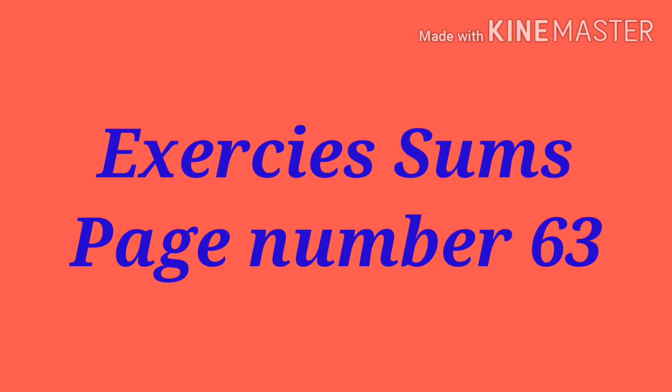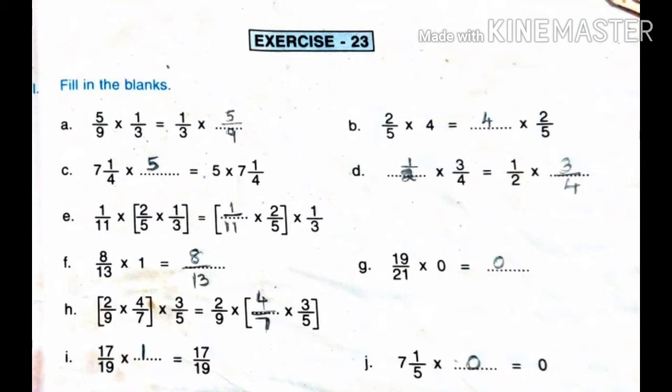First sum — fill in the blanks. The sum is: 5/9 into 1/3 equals 1/3 into dash. This is based on the commutative property. Multiplication of fractions is commutative — when we multiply two fraction numbers, the order of the factors does not affect the product. In other words, the product remains the same no matter what order we multiply two fraction numbers. This is called the commutative property of multiplication.